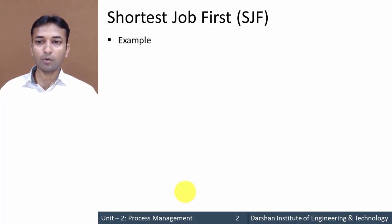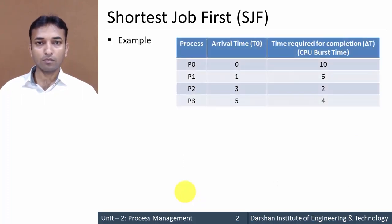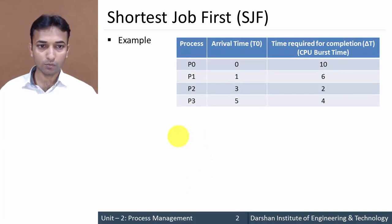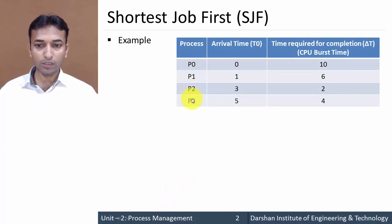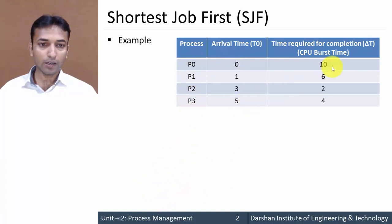Now let's move to the example of Shortest Job First. We will consider the same example we have already seen in First Come First Serve. For processes P0 to P3, arrival times are 0 to 5, and time required ranges from 10 to 5.